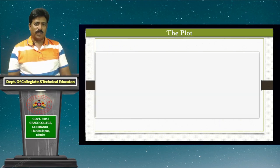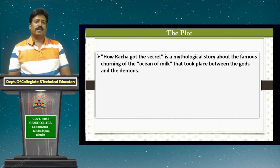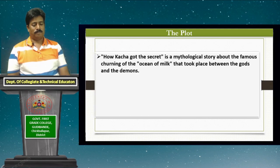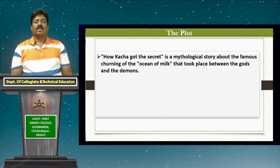Now let us know the plot of the story 'How Kacha Got the Secret.' It is a famous mythological story about the churning of the ocean of milk — the Samudra Manthan — that took place between the gods and the demons. They were expecting the elixir, or Amrit, from this churning. For that, a severe war broke out between gods and demons, resulting in heavy casualties, with gods perishing in dozens and demons in hundreds.